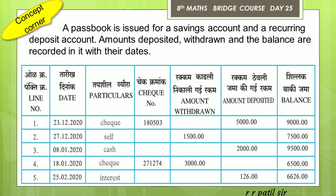Again, the next entry — let us see. On January 18th, there is a withdrawal by cheque card of 3,000. After this withdrawal, we have a balance of 6,500.